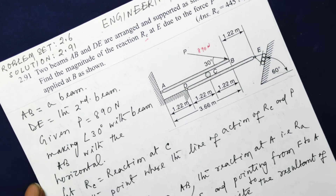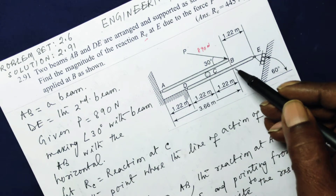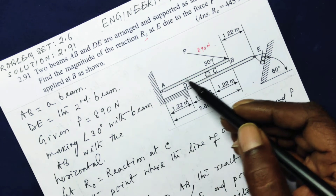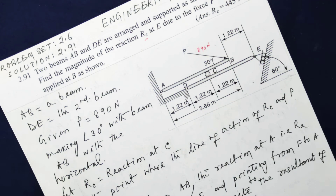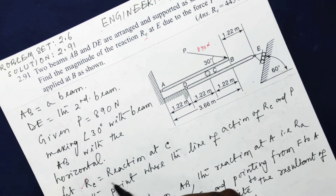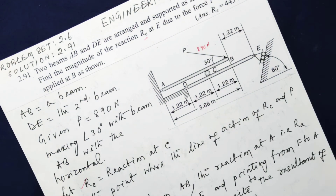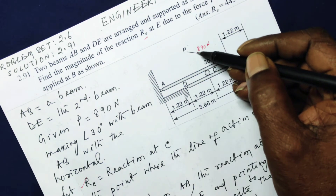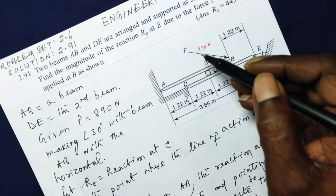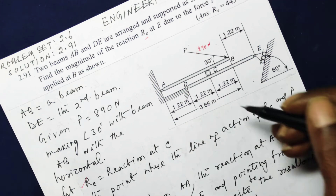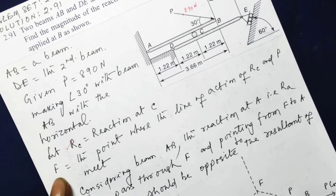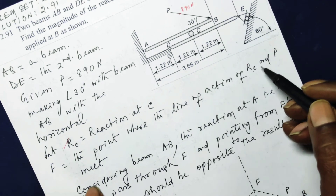As you can see, there will be reaction forces at multiple points. At point C, where beams AB and DE are connected, let the reaction be RC. If we extend the line of action of RC and the applied force P, they will meet at a point which I have labeled F. So F is the point where the line of action of RC and P meet.